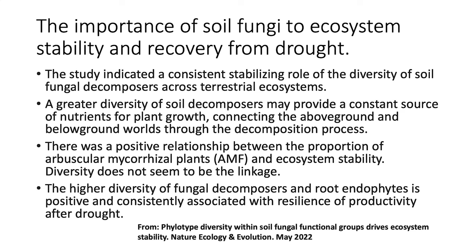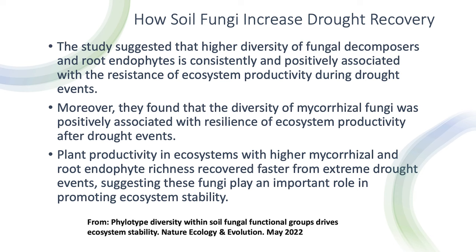That's really what you want — systems that, of course, we're going to get droughts and some years productivity will be low. But when the system is good, you want it to respond as best it can. By having that fungal component, the system is able to take advantage of the rainfall when it comes. In terms of how fungi increase drought recovery: the diversity of mycorrhizal fungi and root endophytes all contribute. It goes back to having that diversity of fungal components.